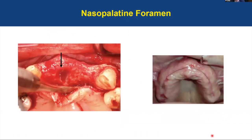The next structure in the maxilla that can affect implant placement is the nasopalatine foramen, also called the incisive foramen. It connects the palate to the floor of the nasal cavity. The canal continues in the oral cavity as a single foramen, but as it goes inside the nasal cavity it usually splits in two and ends up at the foramen of Stenson. Through this canal we have the terminal branch of the descending palatine artery and the nasopalatine nerve.